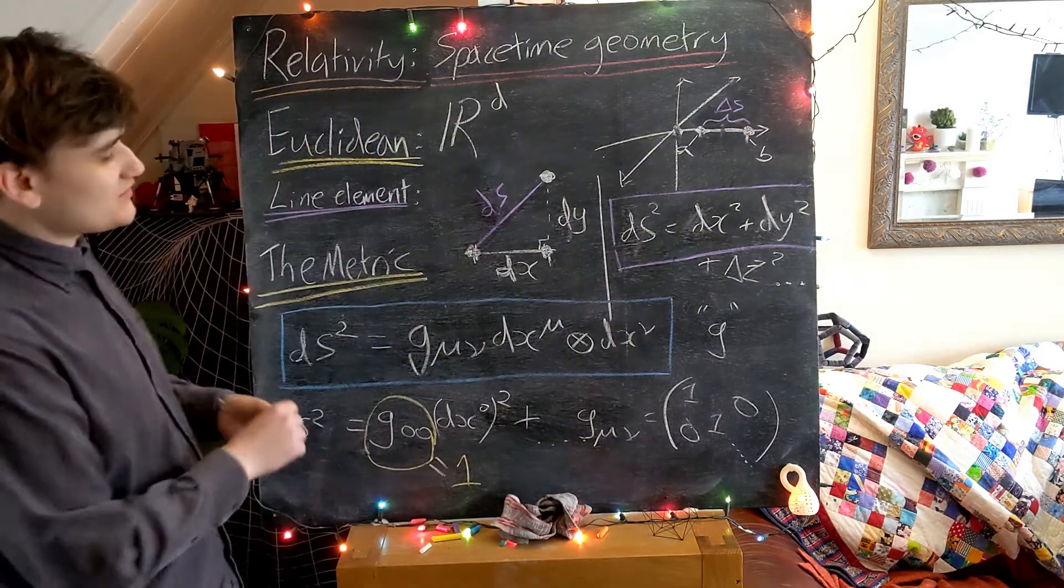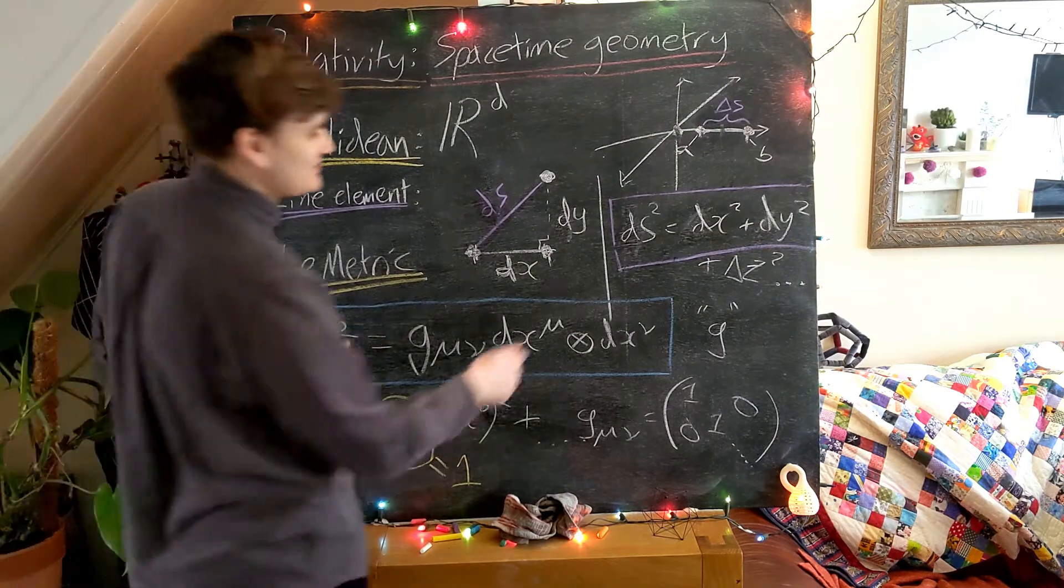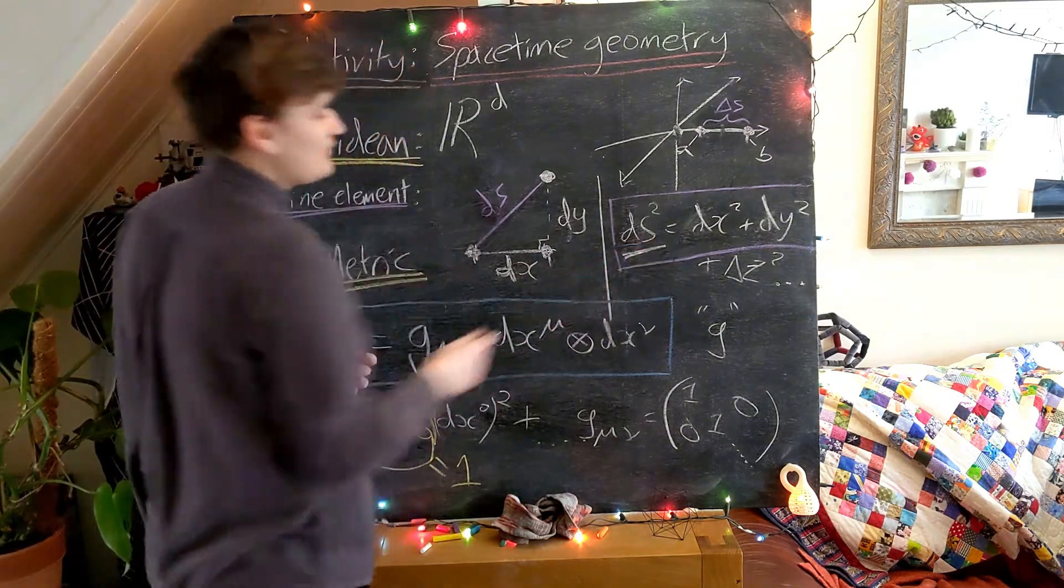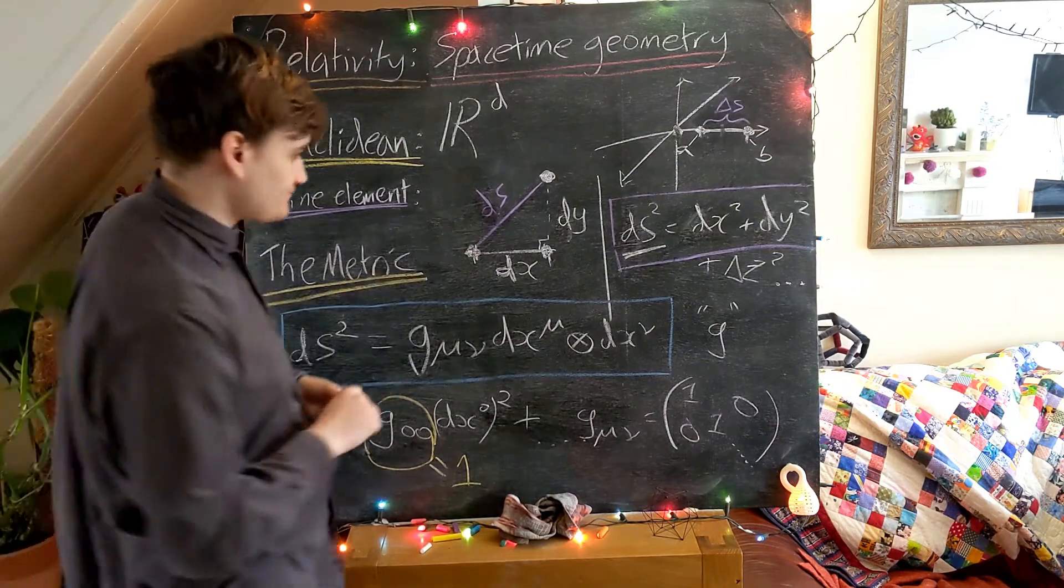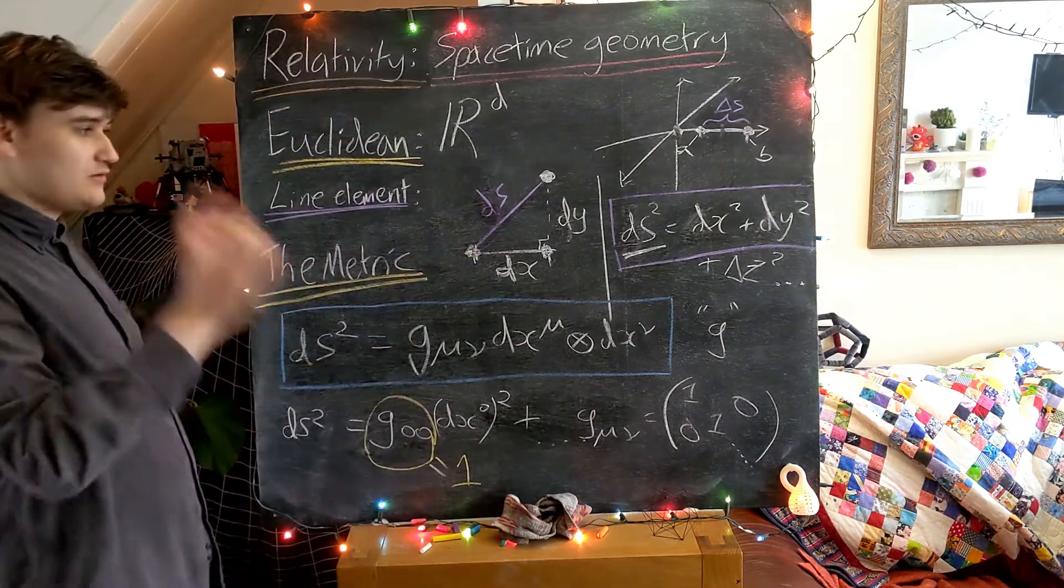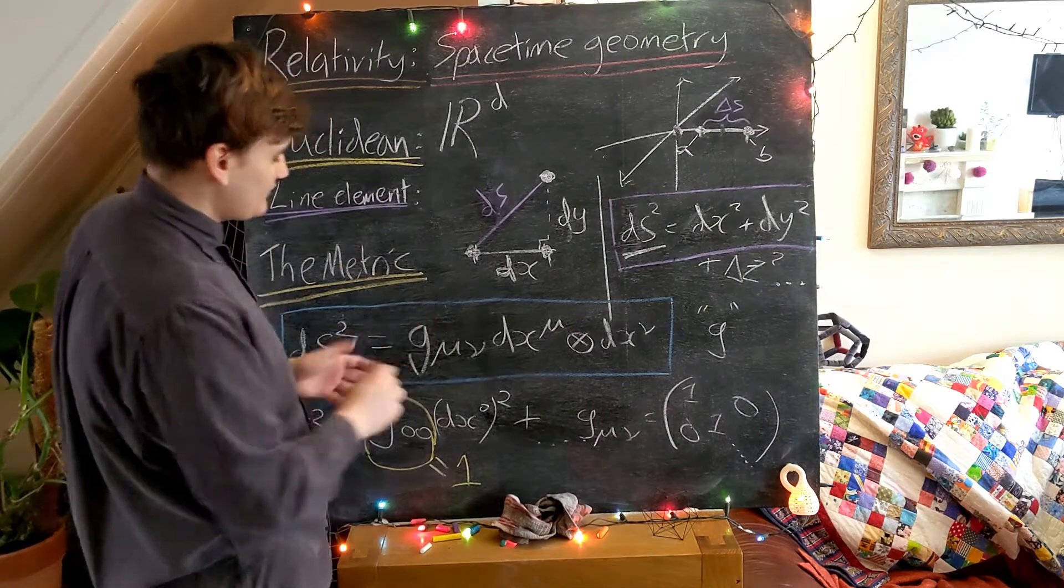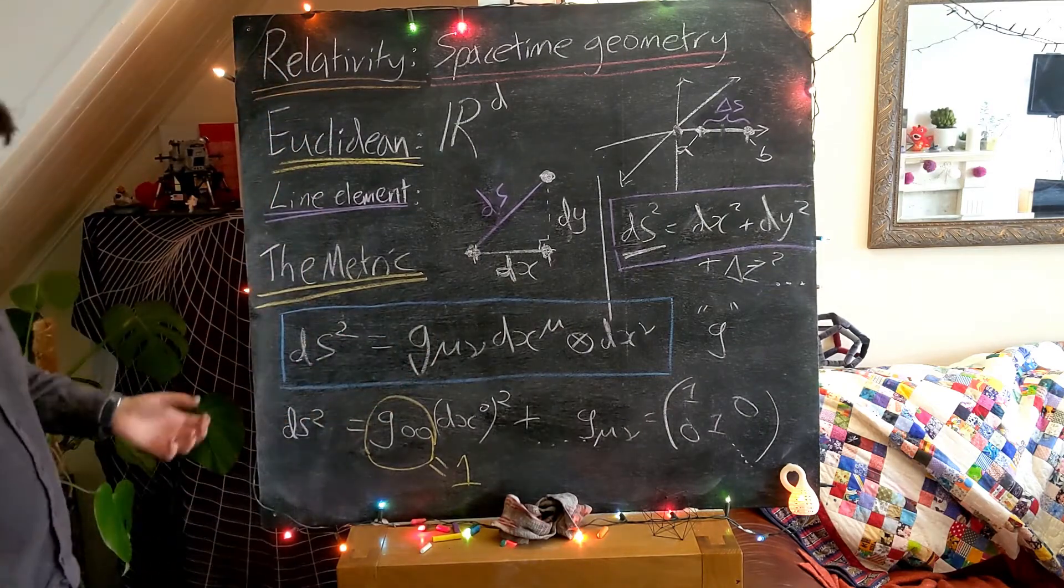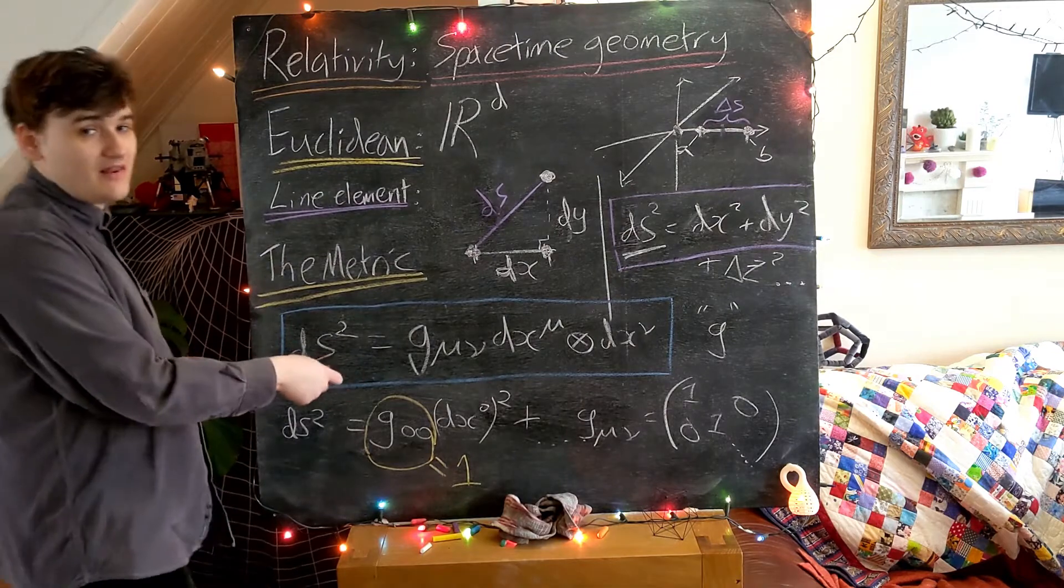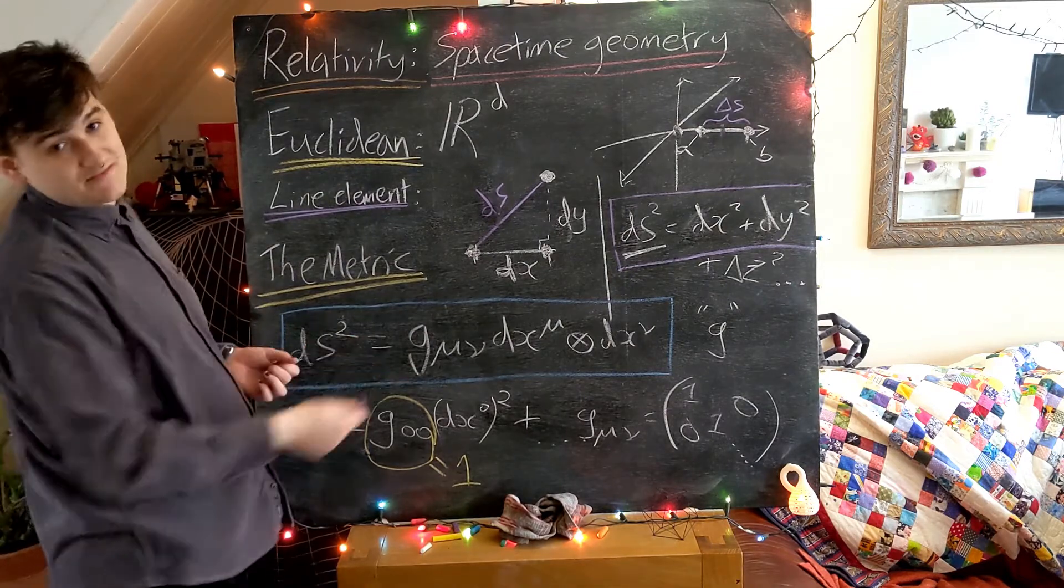Because, well, all of the important geometric information is contained in this line element. It defines the distances between points in our geometry. We can boil all of that important information down just into a single matrix of components, and then we always know that we can extract the line element using this formula.